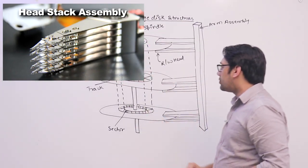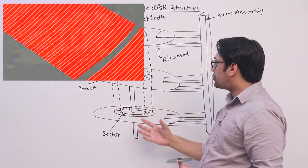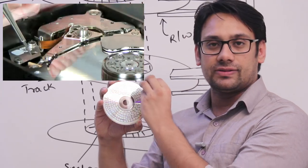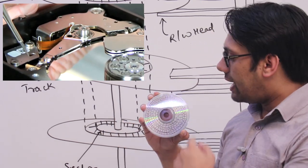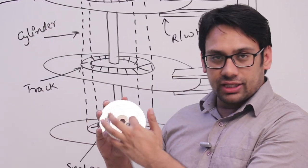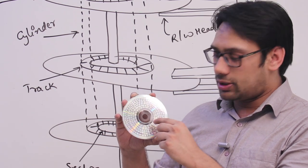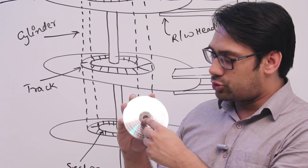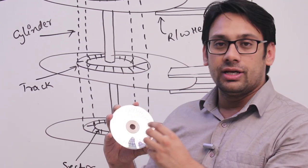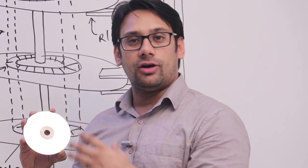Coming back to the structure — these drives have tracks, and every track is divided into sectors. There are many tracks in a platter and every track is divided into various sectors. The number of sectors in every track is equal. The most inside track — closest to the center — has the highest density of storage. It stores more information because even that inner track has the same number of sectors as the outer tracks.